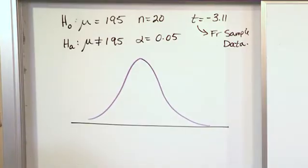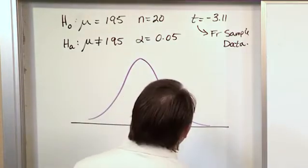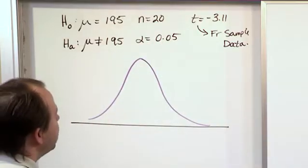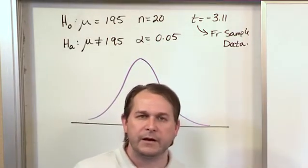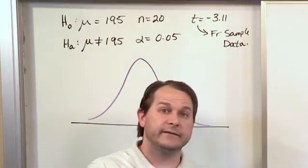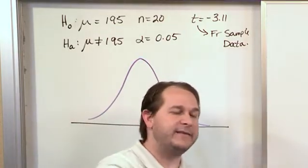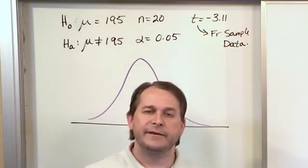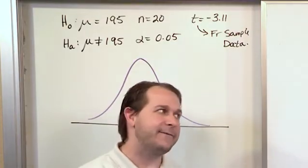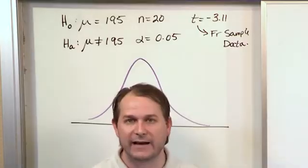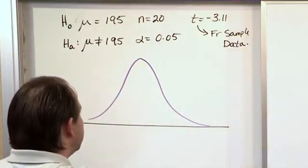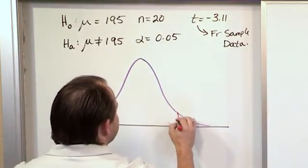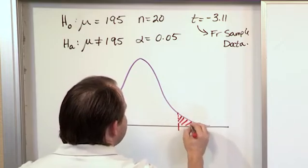And how do we set up our rejection regions for a two-tailed test? Well, we know that alpha is 0.05, so that has to be in the tails, right? If it were a left-hand test, then all of that alpha would be in that tail. If it were a right-hand test, all of that alpha would be in the other tail. But since this is a two-tailed test, half of this alpha is in one tail, half of this alpha is in the other tail.